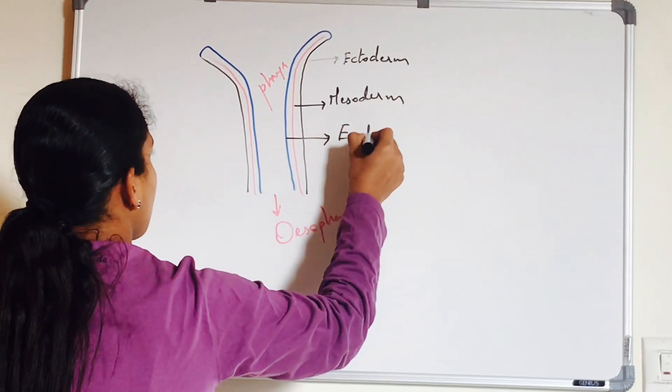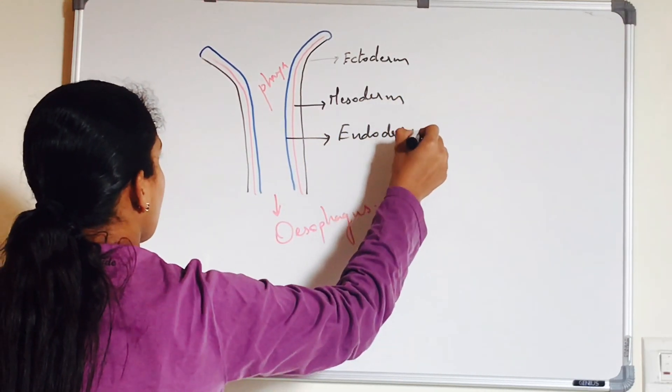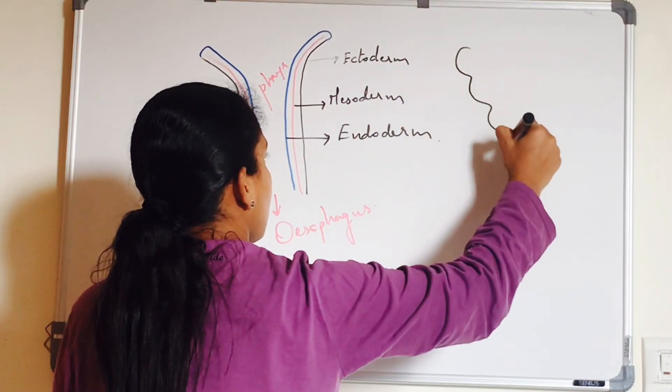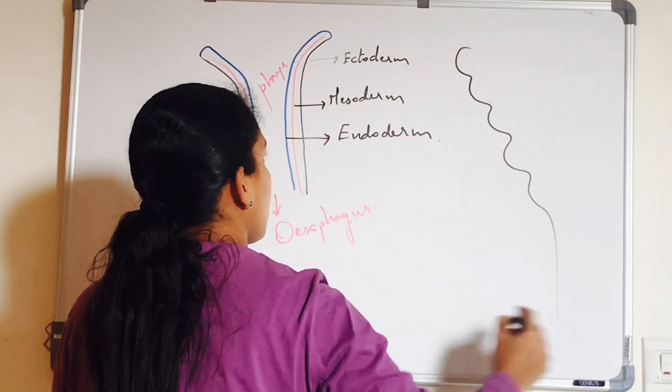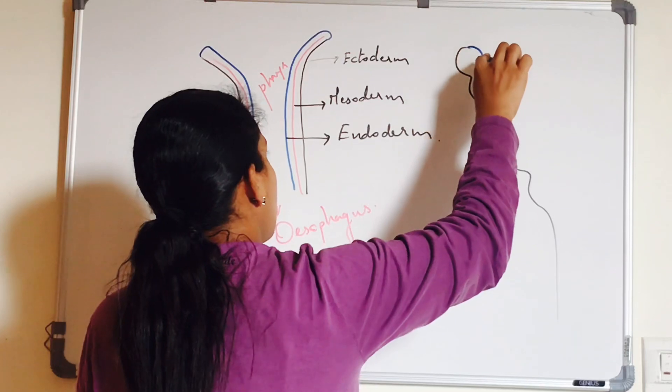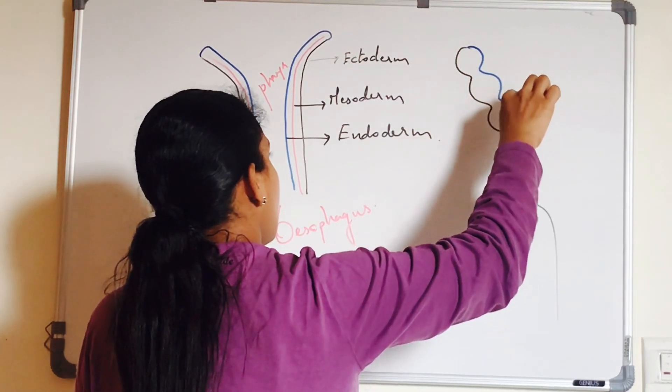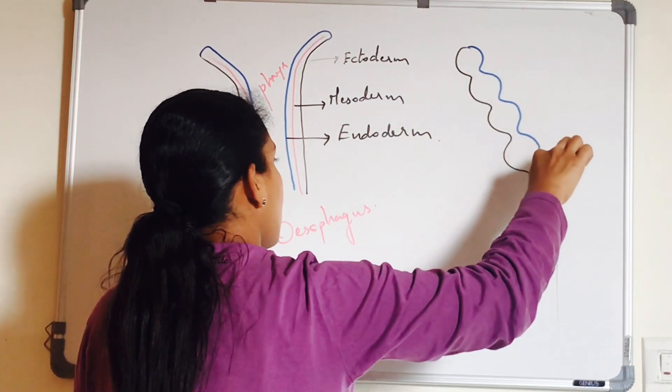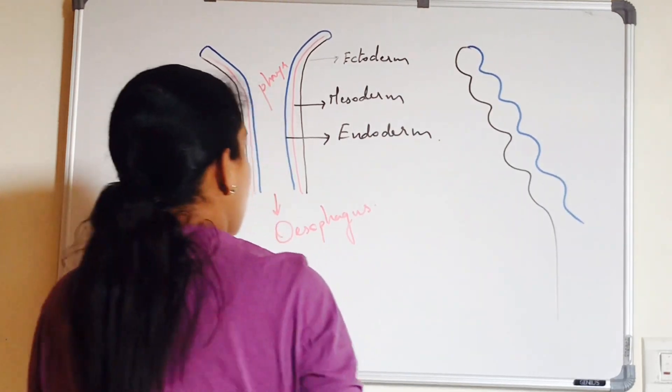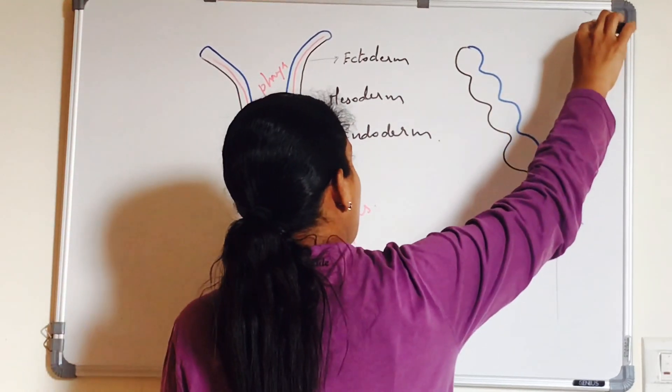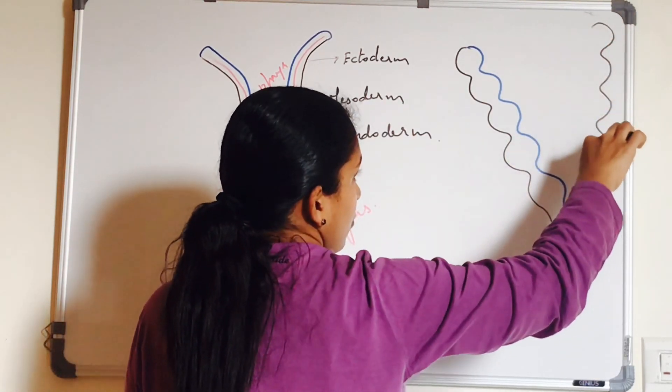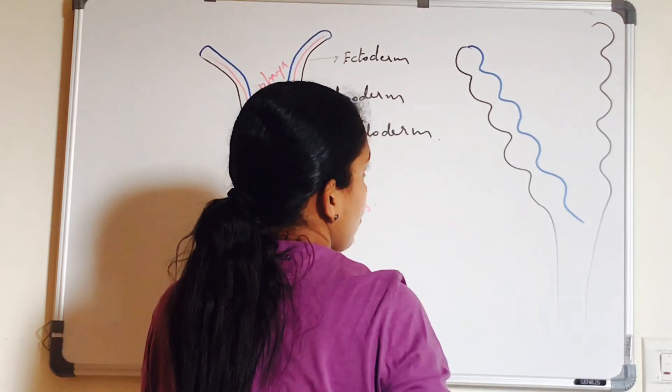So each branchial arch consists of an outer covering of surface ectoderm, central core of mesoderm, and inner lining of pharyngeal endoderm. In the interval between the arches, ectoderm and endodermal layers are closely approximated to form closing membranes. The branchial arches are six cylindrical bars which contain skeletal elements, arteries, nerves, and muscles.